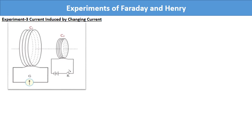The previous two experiments involved relative motion between a magnet and a coil and between two coils respectively. Through another experiment, Faraday showed that this relative motion is not an absolute requirement. In the figure you can see two coils C1 and C2 held stationary. Coil C1 is connected to galvanometer G, while the second coil C2 is connected to a battery through a tapping key K.